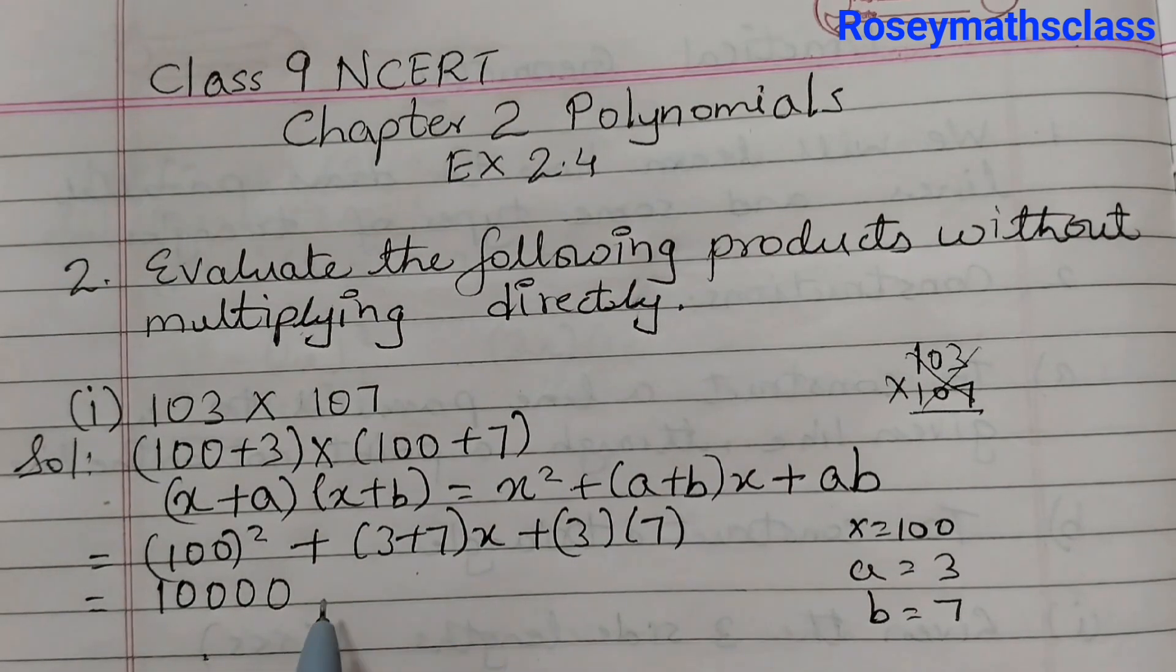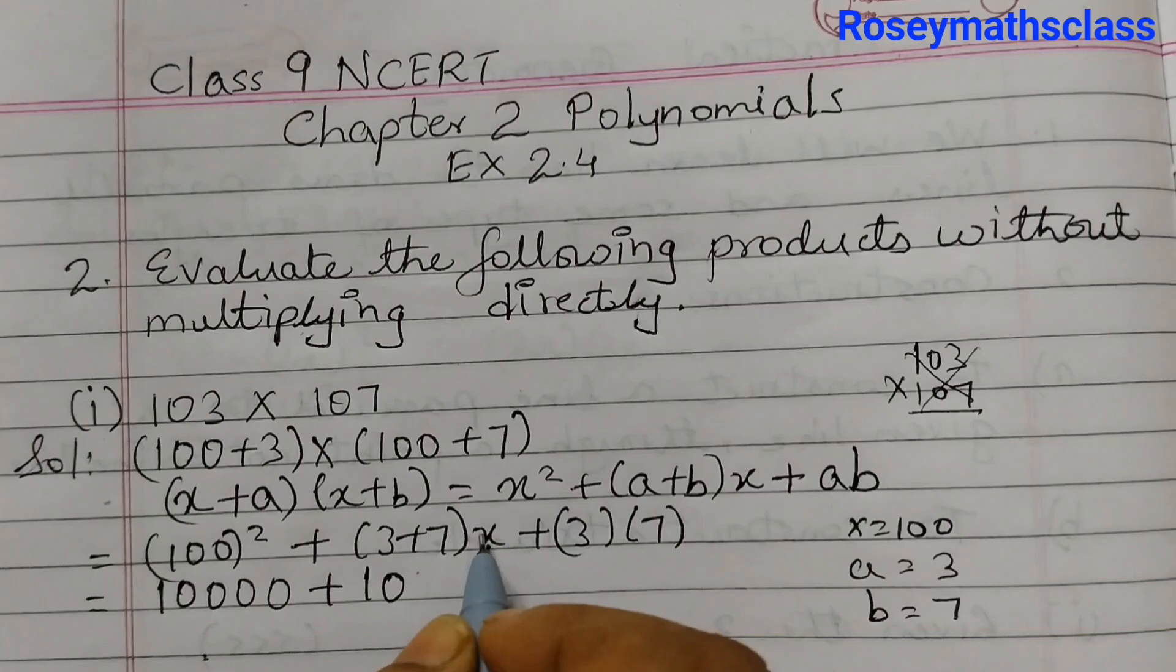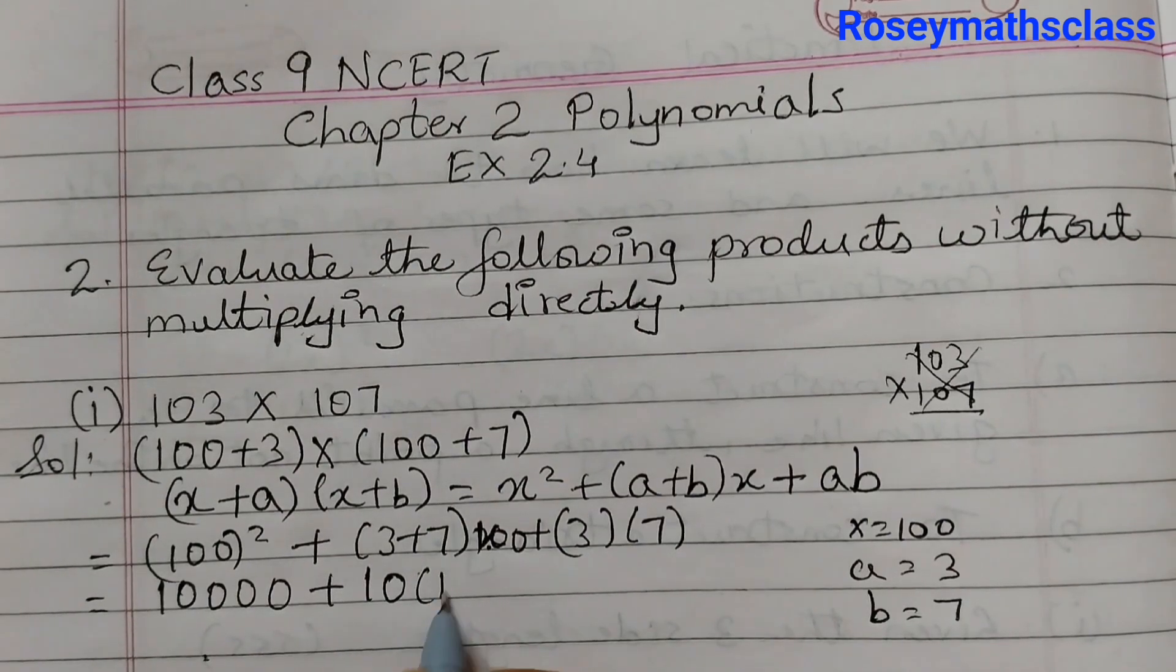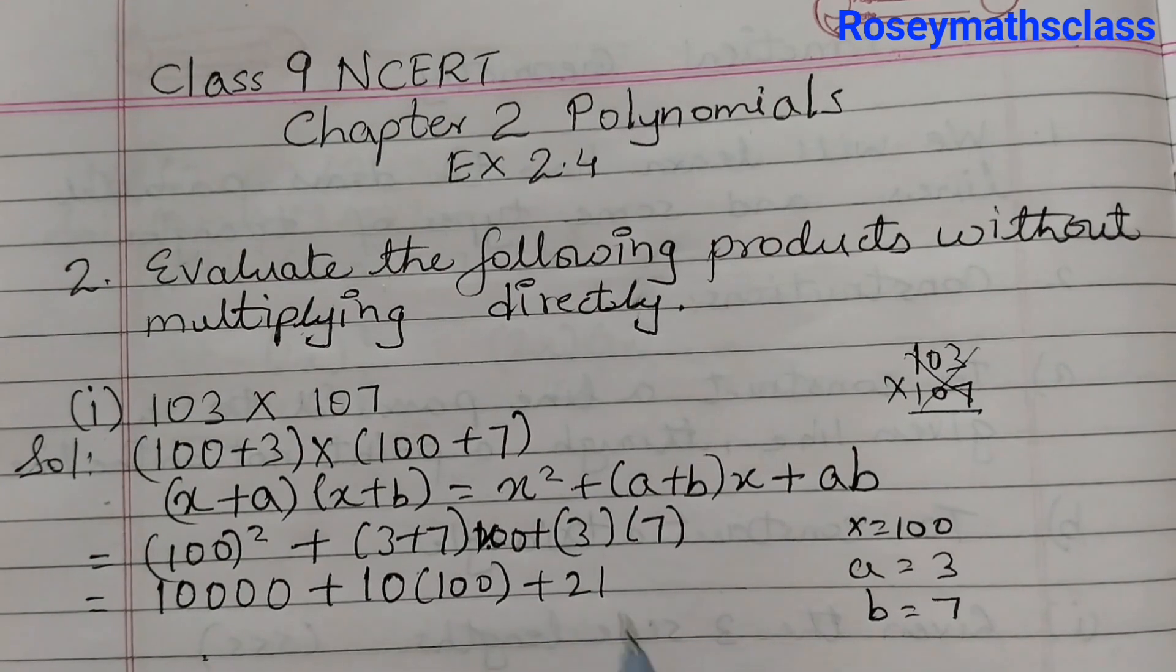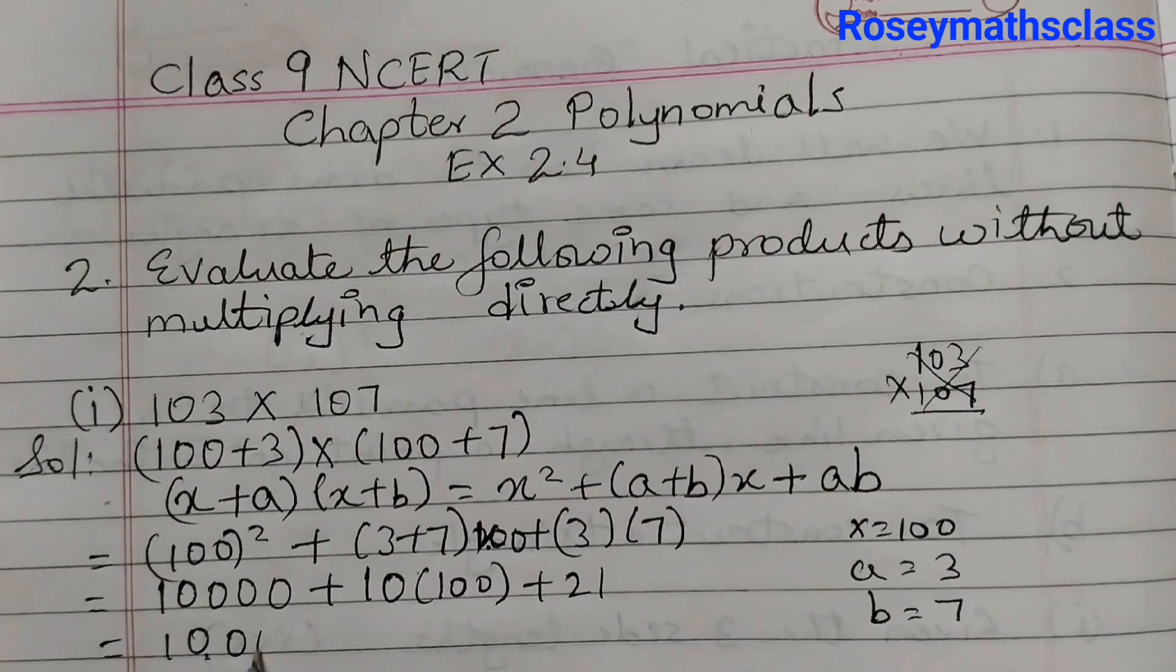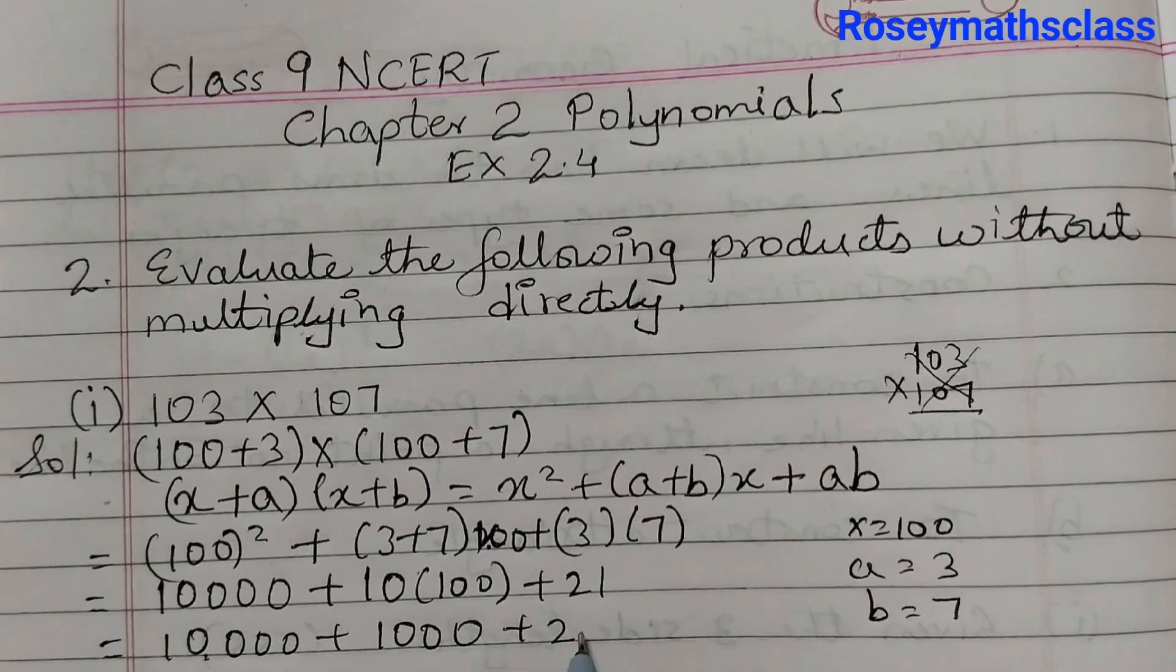Now 1, 2, 3, 4: 10,000 plus 3 plus 7 is 10. Here in place of x we should have written 100, so 10 into 100 plus 3×7 is 21.